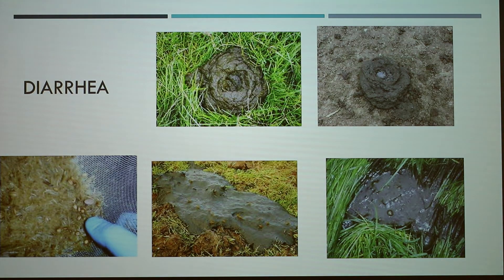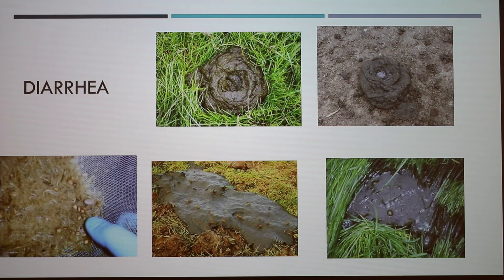Diarrhea in your herd is the clearest indicator that there are problems with rumen function and your ration. The grey, bubbly appearance of the manure indicates that the animal is suffering from paracarotosis. The top two samples shown are good quality — correct colour, good texture, and solidity — compared to the bottom three, which are very loose. You can see bubbles and grey colouring in the bottom right image, and undigested material in the bottom left, showing the rumen isn't functioning properly.